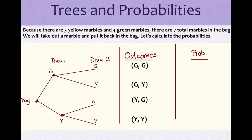Now that we know the outcomes: there are three yellow marbles and four green marbles in the bag, so there are a total of seven marbles. We're going to take out a marble on the first draw and put it back in the bag and draw again. For the first branch, the probability of drawing a green is four out of seven. The probability of drawing a yellow is three out of seven.